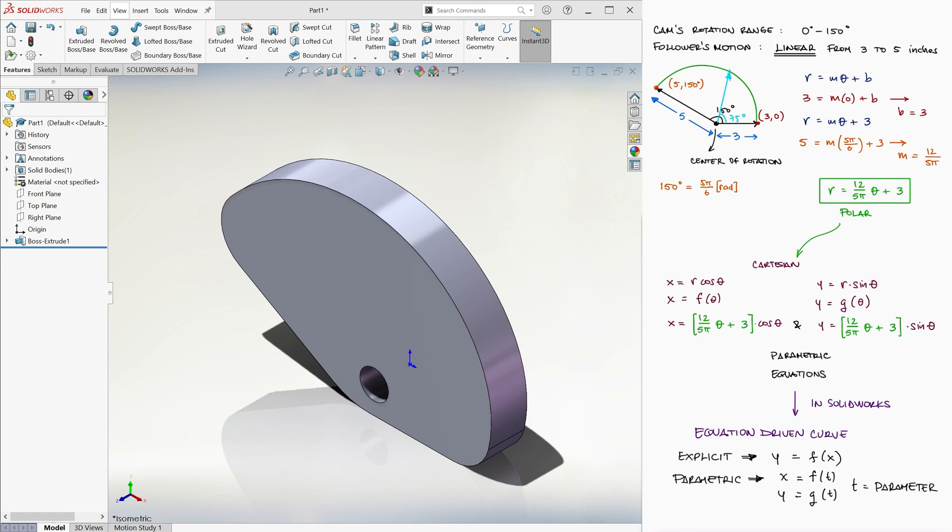We now know how to use the equation-driven curve function to make a sketch that follows any type of curve described by a mathematical equation, for whatever application we need it for. The links to the other lectures of the SolidWorks course are down in the description below, so don't forget to check those out, as well as the links to the other engineering courses. Thanks for watching!